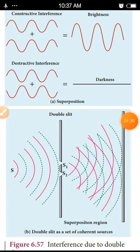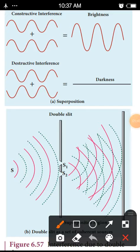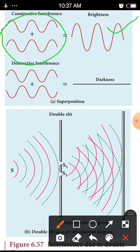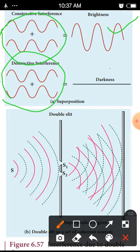What is constructive interference? When two waves are in phase, the two superimposing waves are brighter. When they are out of phase, the two superimposing waves are dark.